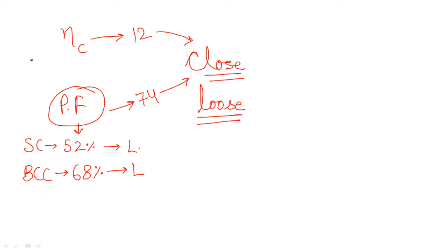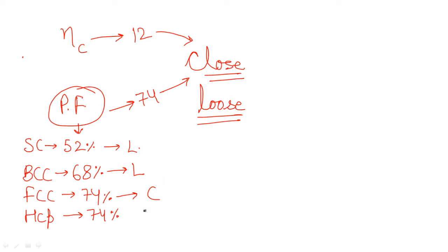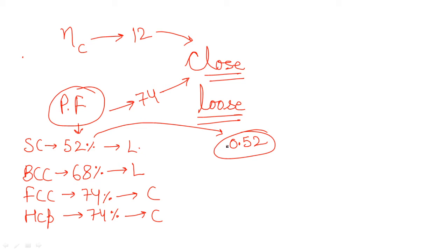For FCC, the packing fraction value is 74%, which means it is a closed packed structure. For the hexagonal closed packed structure, HCP, the packing fraction is also 74% — and it can sometimes be given as 0.52 in decimal form without percentage, so options like that can also be answered. For the diamond cubic structure, the packing fraction is 34%, which shows it is a loose packed structure.